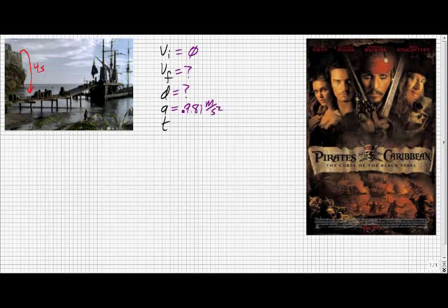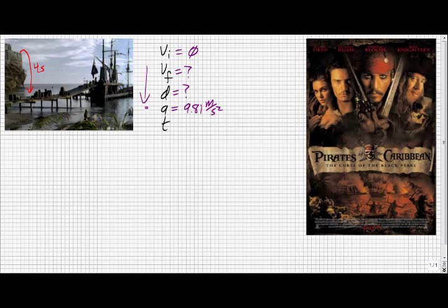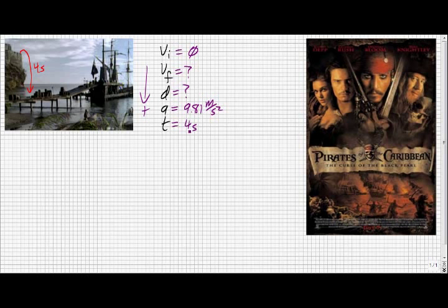We know acceleration must be 9.81 meters per second squared down because we're on the surface of the earth, and we'll say that's positive because we'll set up down as the positive direction. And finally, we know time is four seconds from our previous measurements.